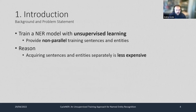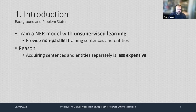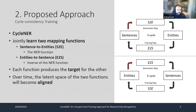We plan to overcome this challenge by training a model in an unsupervised way, using two separate sets of training sentences and entities. The reason for doing this is that acquiring sentences and entities separately is usually less expensive than doing this via annotation. For this purpose, we have developed Cycle NER, which is an unsupervised framework for NER, based on the idea of cycle consistency training.